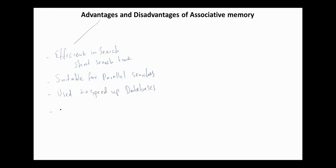The main advantages of associative memory are: it is efficient in search, with short search time since the search is implemented by hardware. In other words, associative memory is suitable for parallel searches. It is used to speed up databases, and it is also used to implement page tables used by virtual memory.